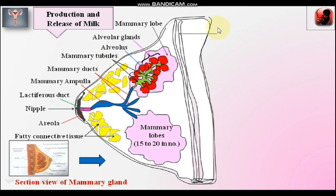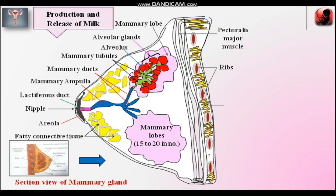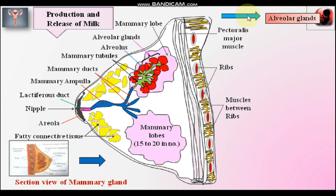Milk is secreted from the alveolar glands. Now I am going to show the route of milk secretion. On the back side of the mammary gland there are pectoral major muscles extending from the second to sixth ribs. In between the ribs, muscles are present known as intercostal muscles. Now, the route of milk secretion.